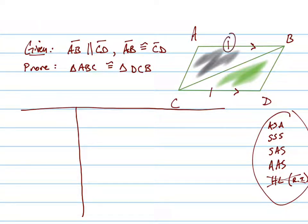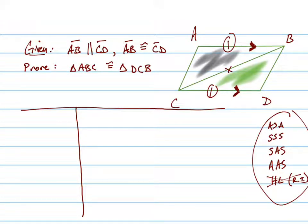We notice that we have a side right here, and we also have that these are parallel to each other. So we have one side. And you'll also notice that this side right there is equal to itself — that's the reflexive property. So we need to find one more angle or one more side in order to prove it.